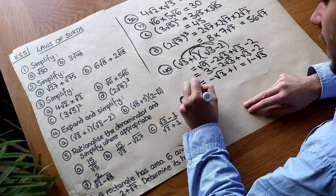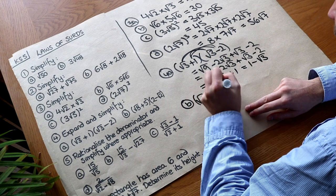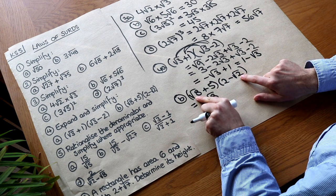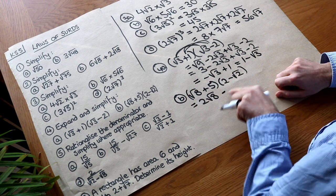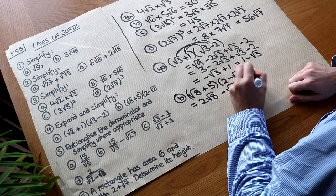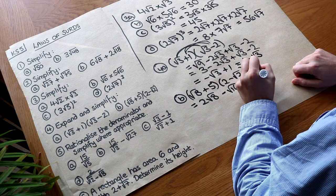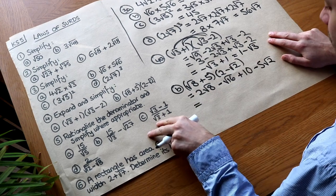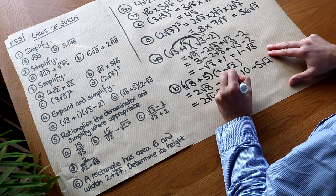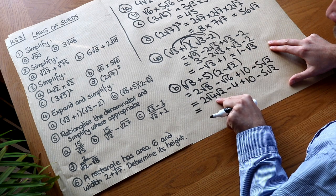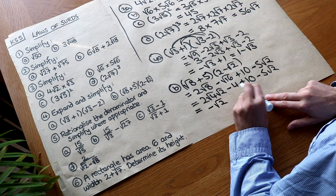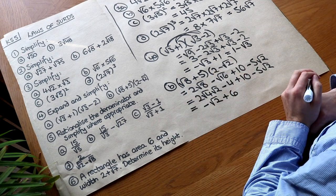For (root 8 + 5)(2 − root 2): root 8 times 2 is 2 root 8, root 8 times minus root 2 is minus root 16, then 5 times 2 is 10, and 5 times minus root 2 is minus 5 root 2. Simplifying: root 8 is root 4 times root 2, so 2 root 8 becomes 4 root 2. Root 16 is 4. So we have 4 root 2 minus 5 root 2, giving minus root 2, then minus 4 plus 10 is plus 6. Written neatly: 6 minus root 2.